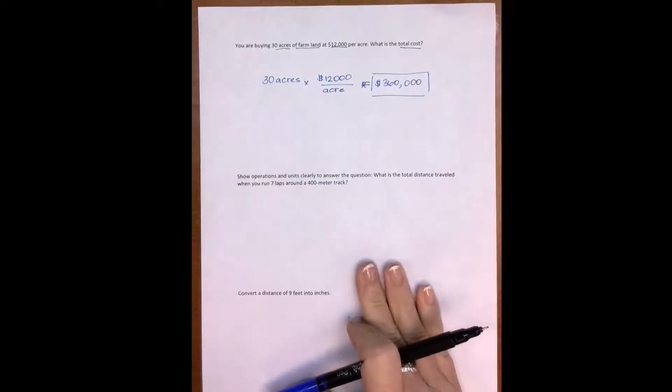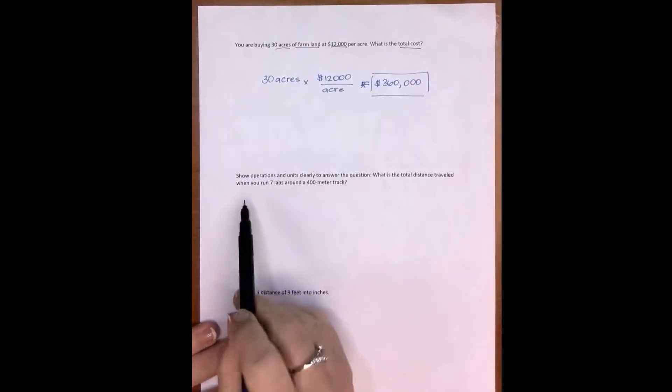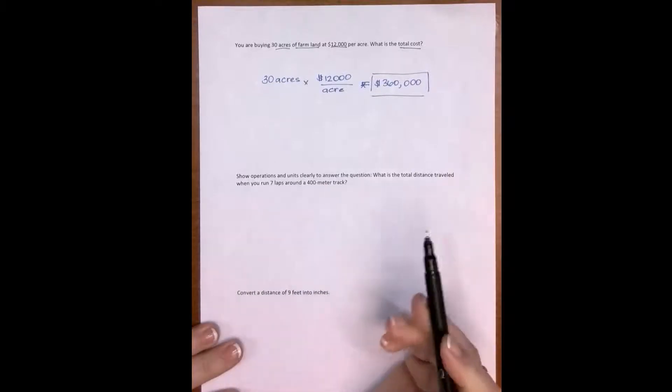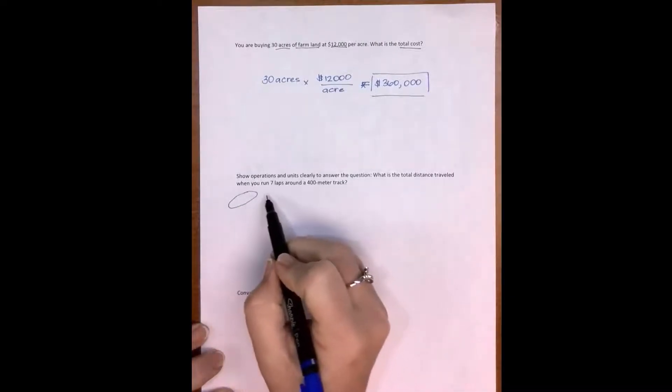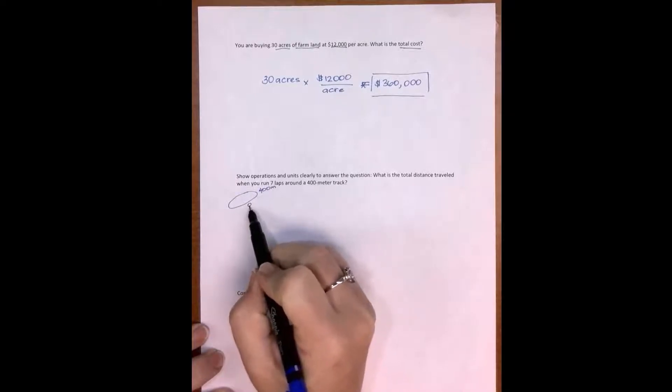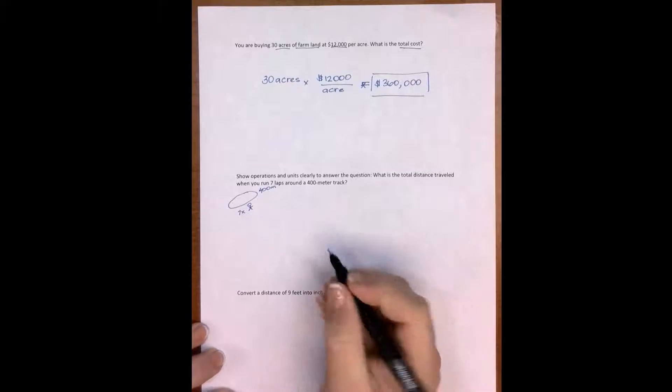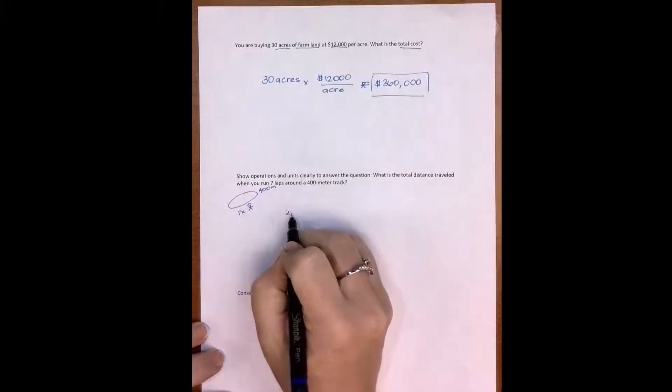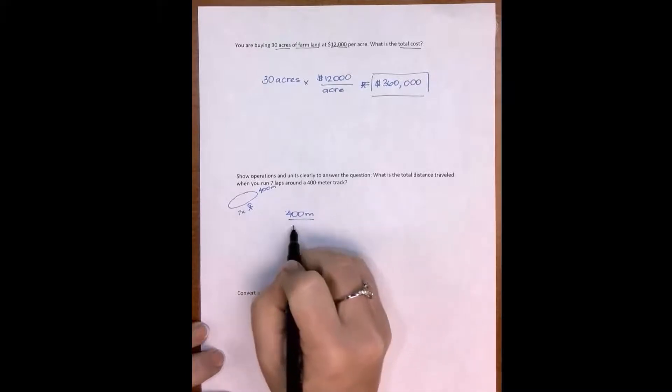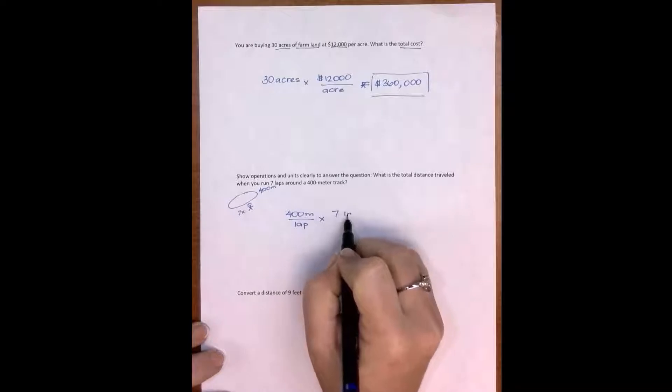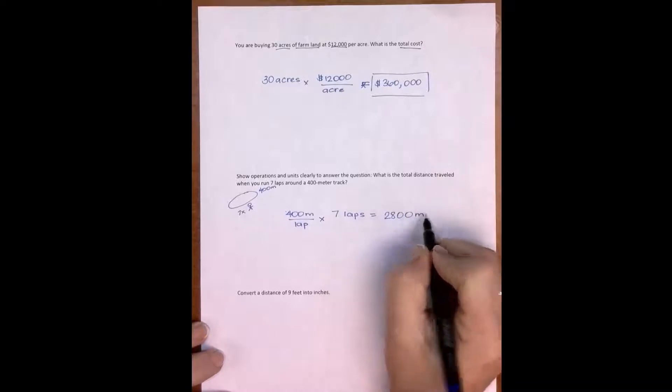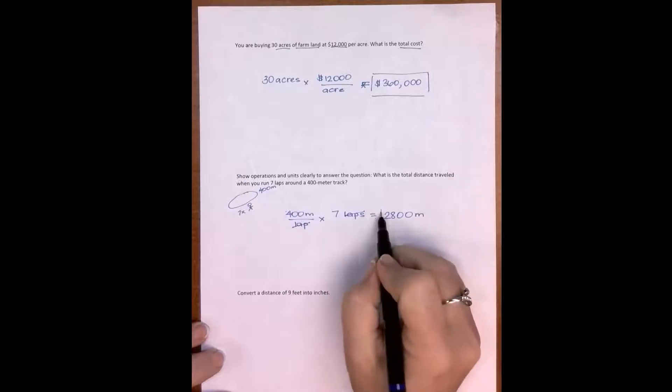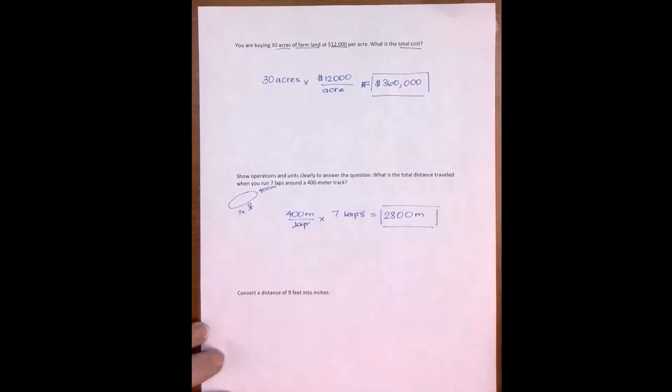Now let's look at another problem. Show operations and units clearly to answer the question. What's the total distance traveled when you run seven laps around a 400 meter track? So you've got a track that's 400 meters. I'm going to run around it seven times. This seems a little oversimple. You're going to have a 400 meter track, 400 meters per lap, and then I'm going to multiply it times seven laps to get 2,800 meters total, because the laps cancel each other out and I'm just left with meters. So I have to be sure to include that in my answer.